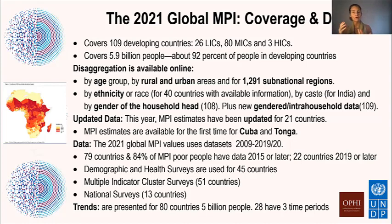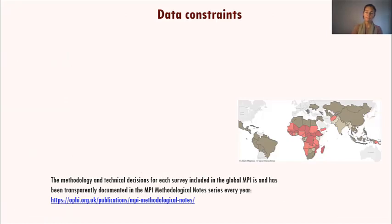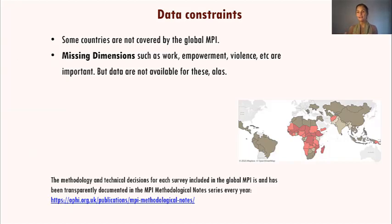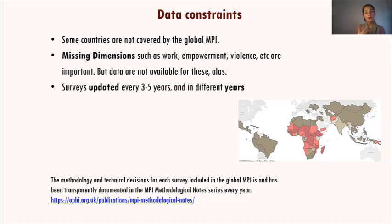We also look at trends for 80 countries and 5 billion people, including 28 countries across three time periods. We recognize that data are not perfect — some countries are missing, and health, education, and living standards don't include violence, empowerment, or work, vital domains to poverty. We also recognize that surveys are somewhat out of date and we don't have post-pandemic data.